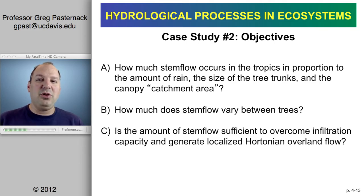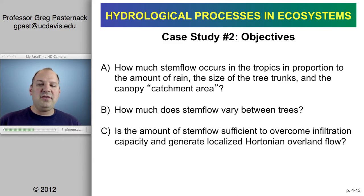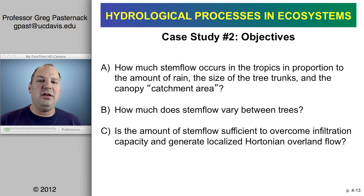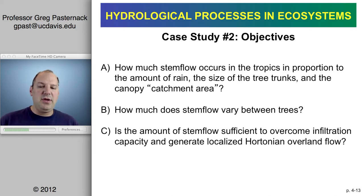The questions for this follow-on study are: how much stem flow occurs in proportion to the amount of rain, the size of tree trunks, and what you can think of as the canopy catchment area — the canopy funneling water to the trunk the same way a watershed funnels water to the outlet. How much of that canopy is actively contributing to stem flow at any one time? How much does stem flow vary between trees? And critically — is the amount of stem flow sufficient to overcome infiltration capacity and generate overland flow?